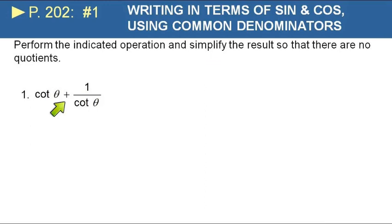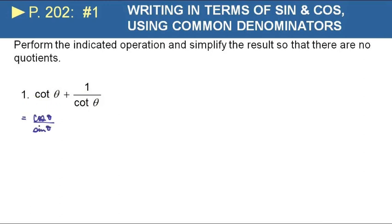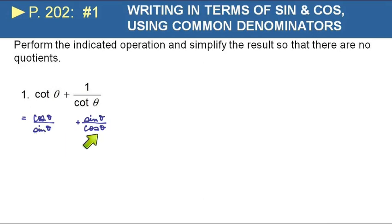I have an addition to do here: cotangent of theta plus one over cotangent of theta. Usually if you have something like this to add together you're going to need to get common denominators to combine them. So let's write cotangent as cosine over sine, and one over cotangent is the reciprocal of cotangent, which would be sine over cosine.